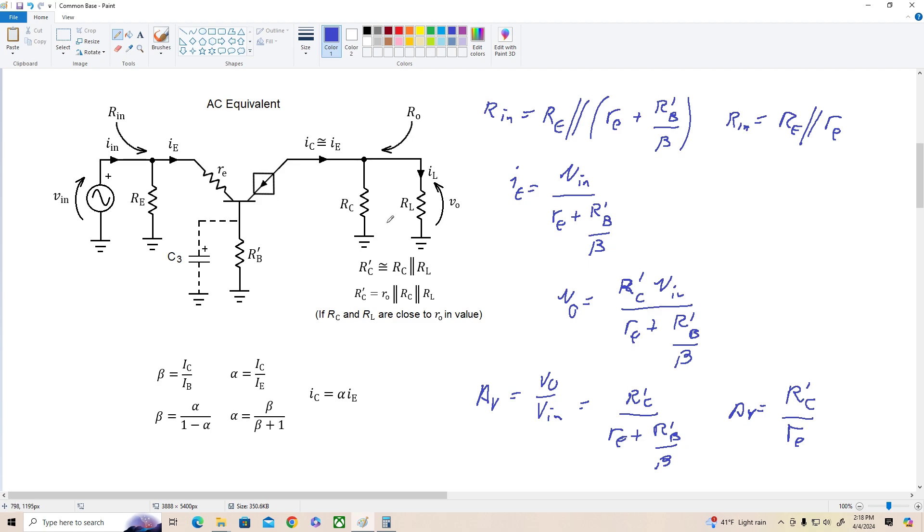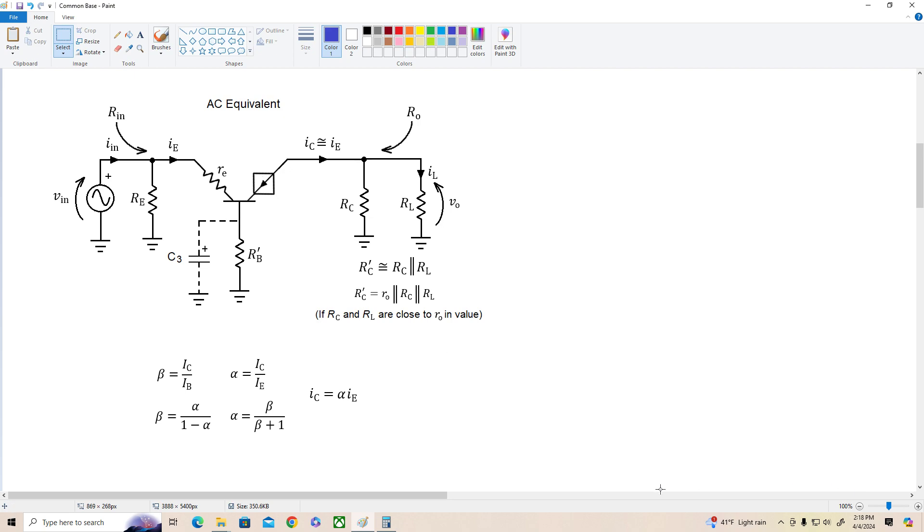And finally the output resistance is approximately equal to the collector resistor, RC, and if we wanted to be a little bit more precise, we know that it's equal to RC in parallel with little RO, but usually this is big enough to ignore, and we can use this approximation. Now I'm going to erase all of my chicken scratch again and bring over the nice equations so that you guys have something decent to look at.